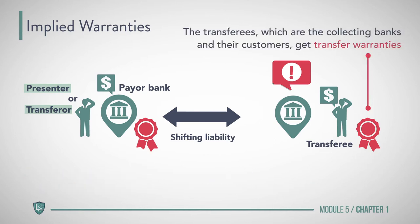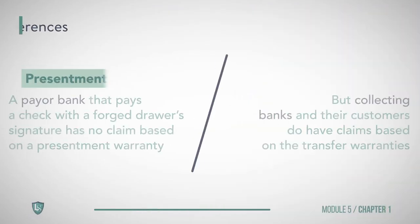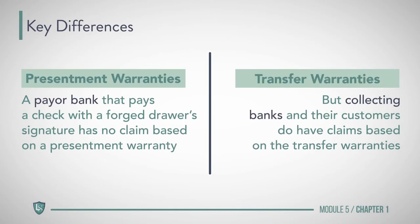The transferees — which are the collecting banks and their customers — get transfer warranties. Certain warranties apply to both presentments and transfers. For example, transferors and presenters both warrant that the person making the transfer or presentment is entitled to enforce the instrument. A key difference is that a payer bank that pays a check with a forged drawer's signature has no claim based on a presentment warranty, but collecting banks and their customers do have claims based on the transfer warranties.